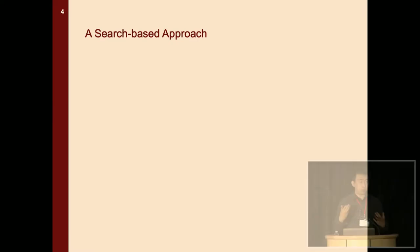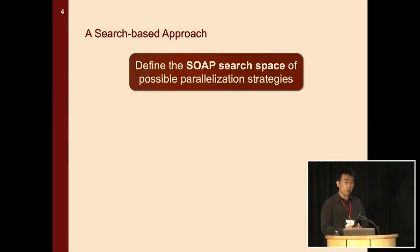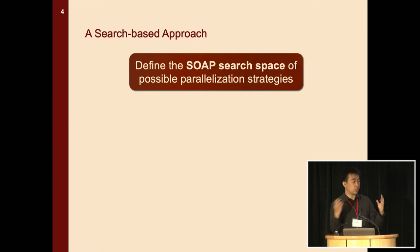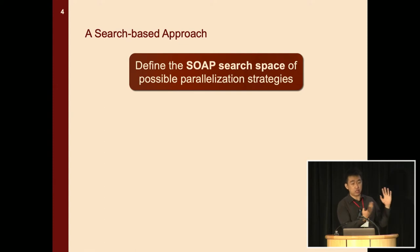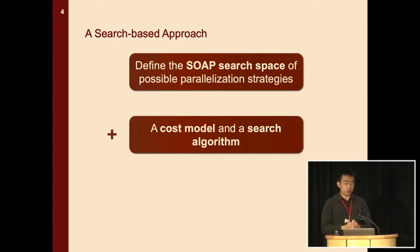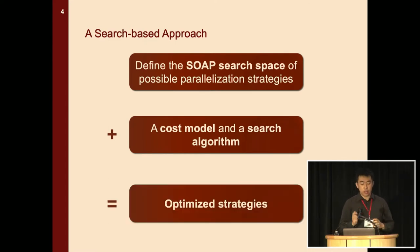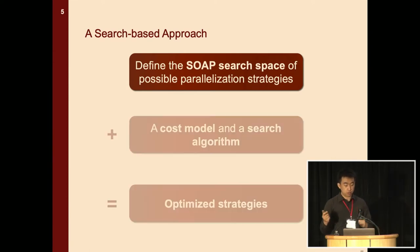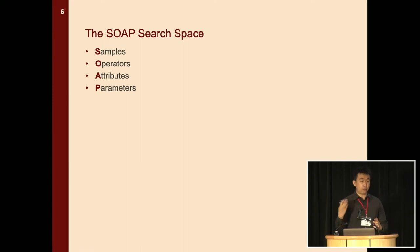In this work, we propose a search-based approach to address the problem. First, we define a new search space of potential parallelization strategies — we call it the SOAP search space. It includes all existing approaches as special cases, and also considers many more different strategies. Second, we build a cost model and a search algorithm to efficiently explore the SOAP search space. By combining these two techniques, we are able to find optimized strategies that outperform existing approaches. The SOAP search space considers the Sample, Operator, Attribute, and Parameter dimensions to parallelize training.